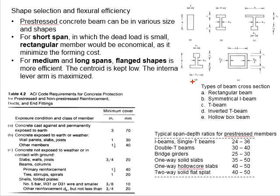There are various types of beam cross-sections that can be used, which include the rectangular beam, symmetrical I-beam, T-beam, inverted T-beam, and also hollow box beam. There can be many other forms of shapes.